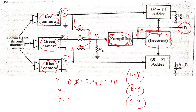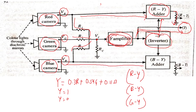In the top line, the red camera signal goes forward and is added with the inverted Y signal to produce R minus Y. Similarly, the blue camera signal is added with the inverted Y to produce B minus Y. So R minus Y and B minus Y are the two color difference signals generated.